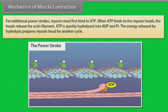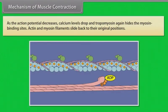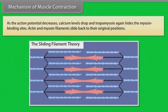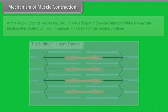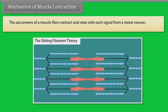For additional power strokes, myosin must first bind to ATP. When ATP binds to the myosin heads, the heads release the actin filament. ATP is quickly hydrolyzed into ADP and Pi. The energy released by hydrolysis prepares the myosin head for another cycle. As the action potential decreases, calcium levels drop and tropomyosin again hides the myosin binding sites. Actin and myosin filaments slide back to their original positions, and the sarcomeres of a muscle fiber contract and relax with each signal from the motor neuron.